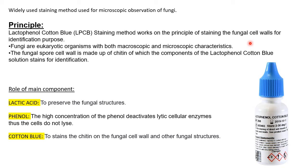Fungi are eukaryotic organisms with both macroscopic and microscopic characteristics. The colony is visible to the naked eye, but conidia or spore arrangements require a microscope. The fungal spore cell wall is made up of chitin, and the components of the lacto phenol cotton blue solution stain this for identification.